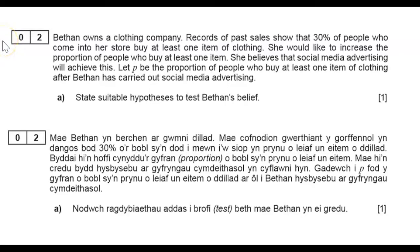Question 2. Bethan owns a clothing company. Records of past sales show that 30% of people who come into her store buy at least one item of clothing. She would like to increase the proportion of people who buy at least one item. She believes that social media advertising will achieve this. Let P be the proportion of people who buy at least one item of clothing after Bethan has carried out social media advertising.